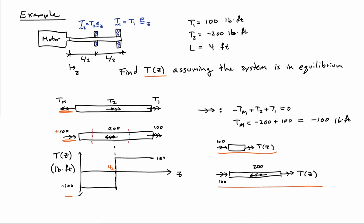So I have my final diagram here, which shows that I have an internal torque that's minus 100 foot-pounds, and then it jumps by an amount 200 up to 100 foot-pounds for the material between the two gears.